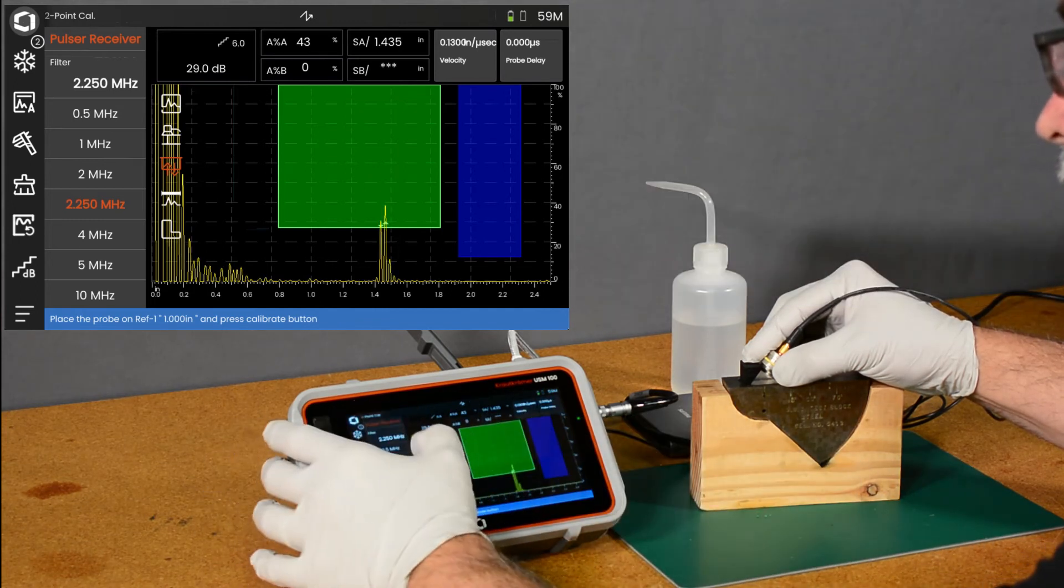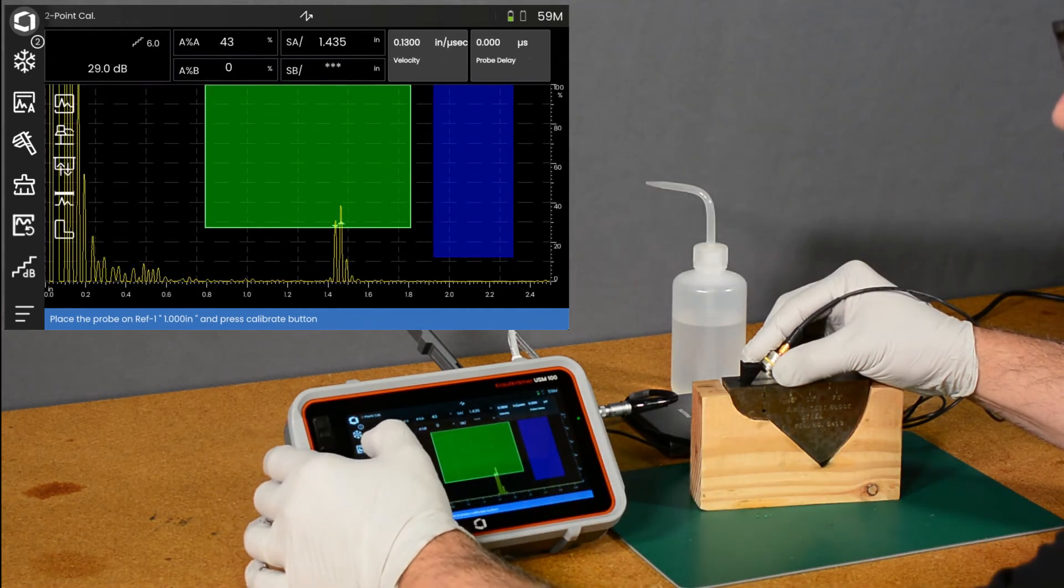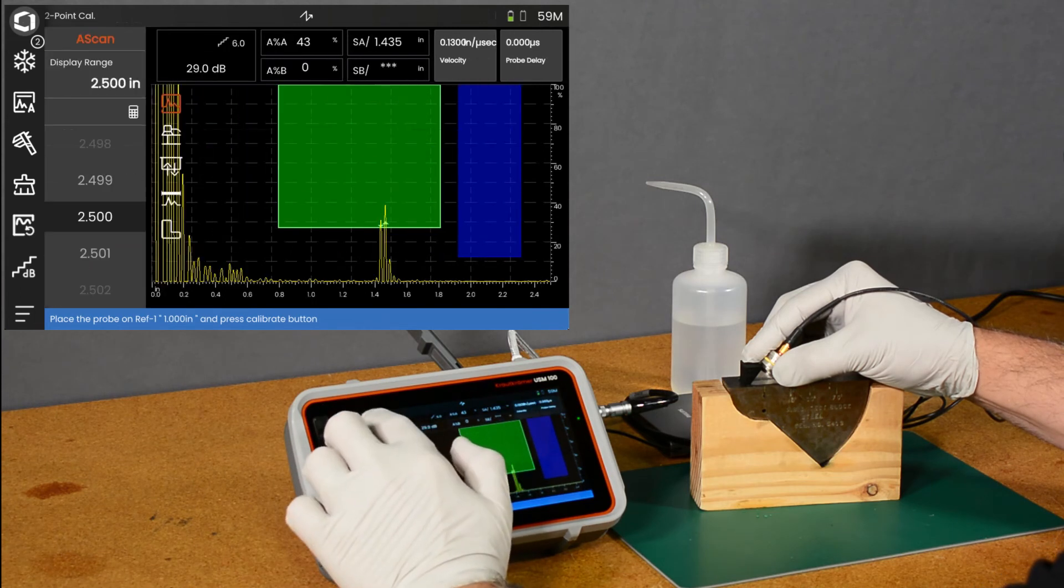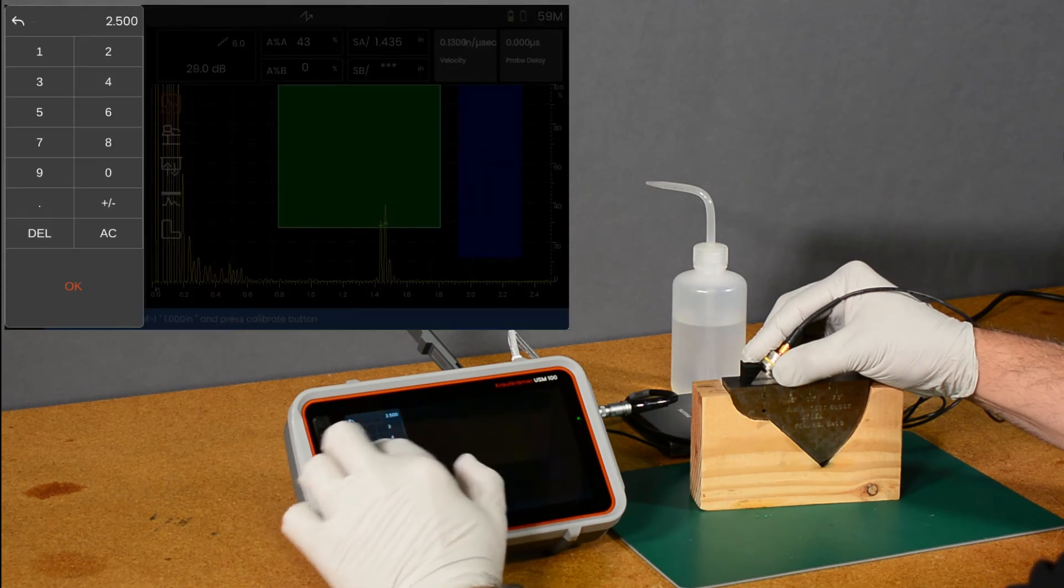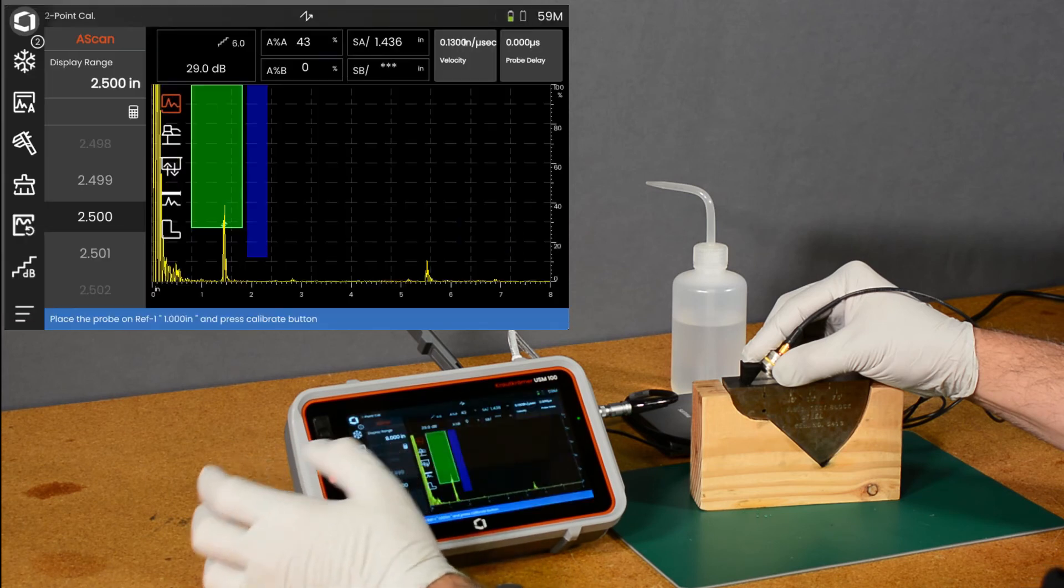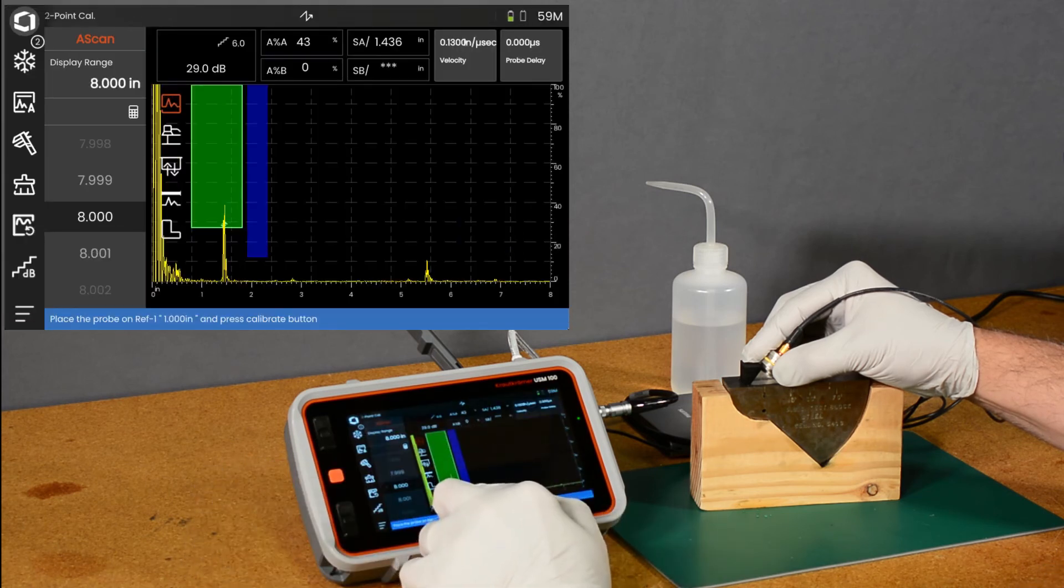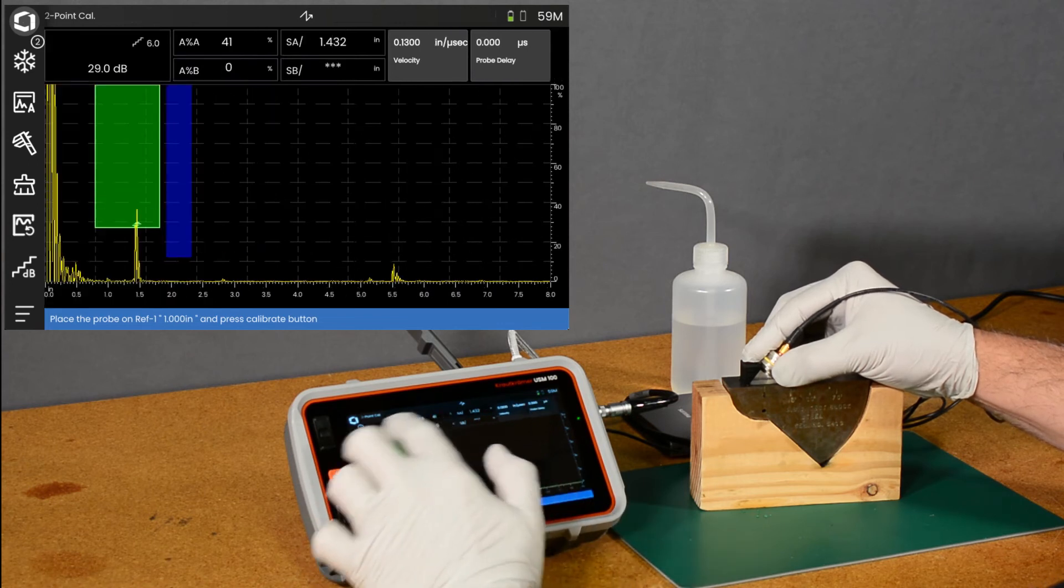So now if I extend my range out to, say, 8 inches, there's my echo at 1-inch and I have an echo out here at 5-inches. So let's close that.